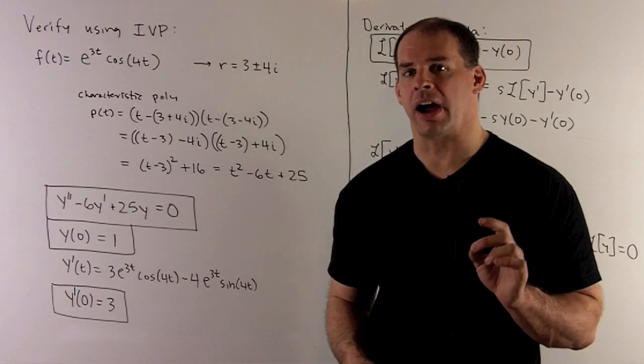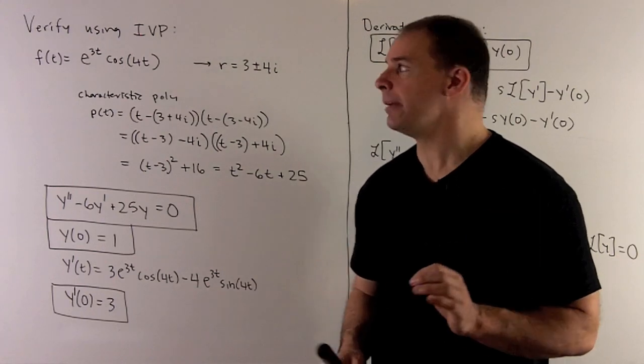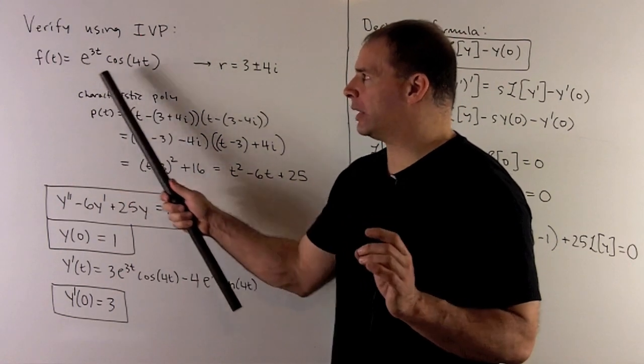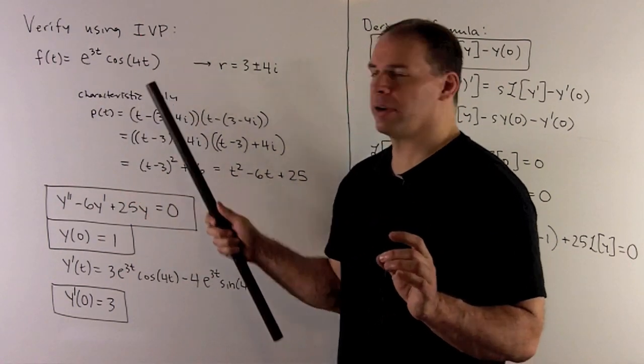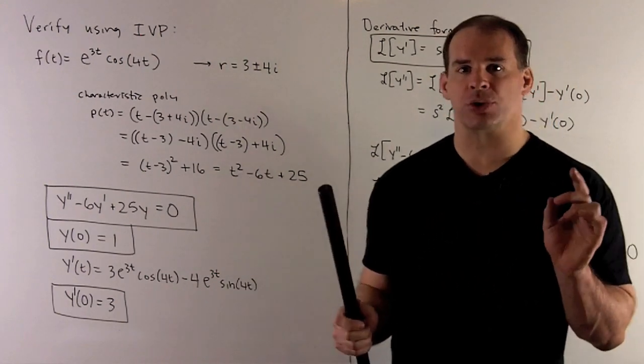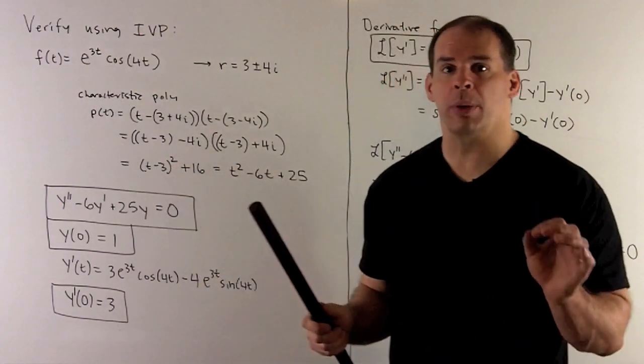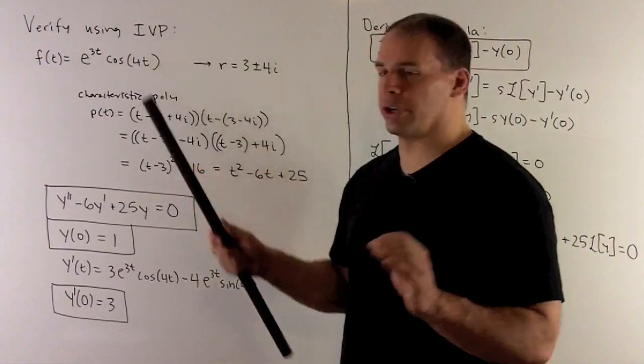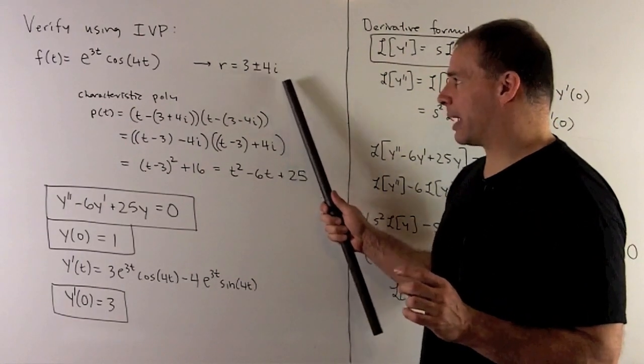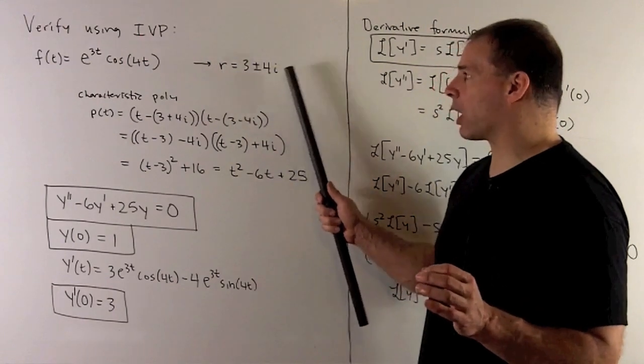Now I'm going to verify our answer by finding the initial value problem that goes with f(t). One thing we know about solutions of this form for differential equations is they come from a characteristic polynomial that has the roots where the 3 goes with the real part, the 4 goes with the imaginary part. The roots are 3 plus or minus 4i.